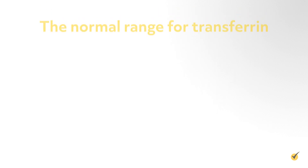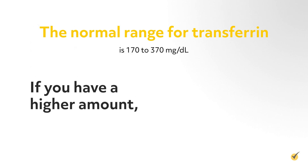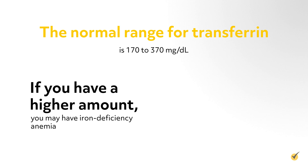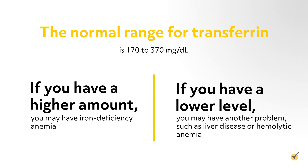The normal range for transferrin is 170 to 370 milligrams per deciliter. If you have a higher amount, you may have iron deficiency anemia. If you have a lower level, you may have another problem such as liver disease or hemolytic anemia.